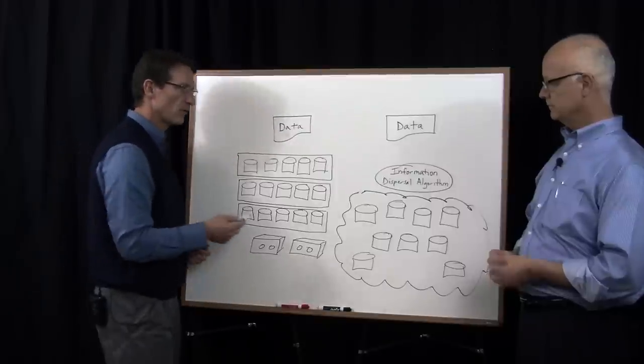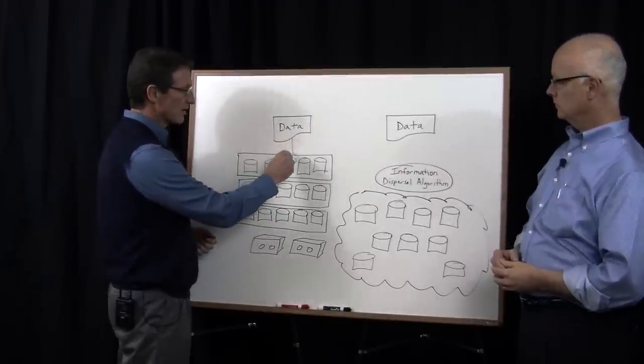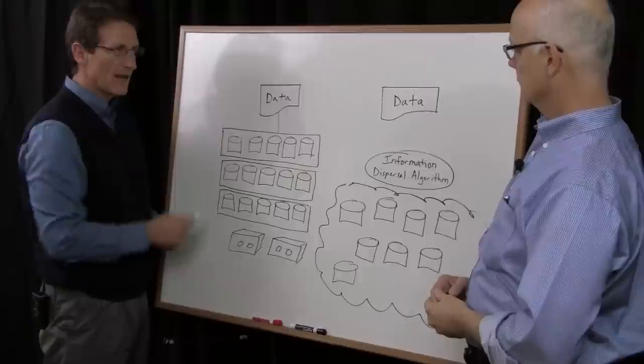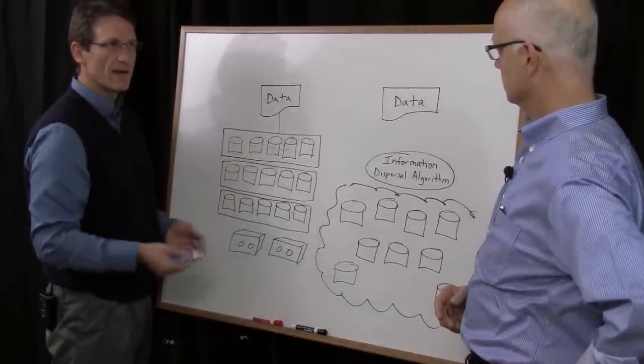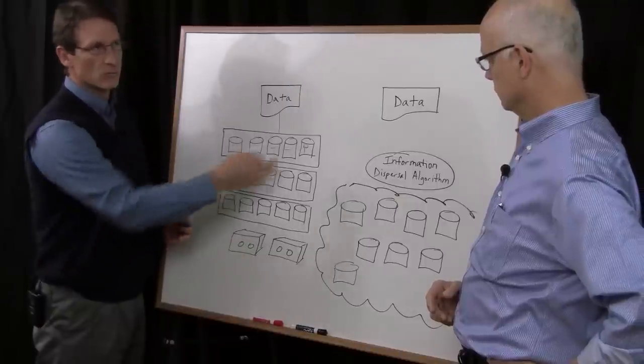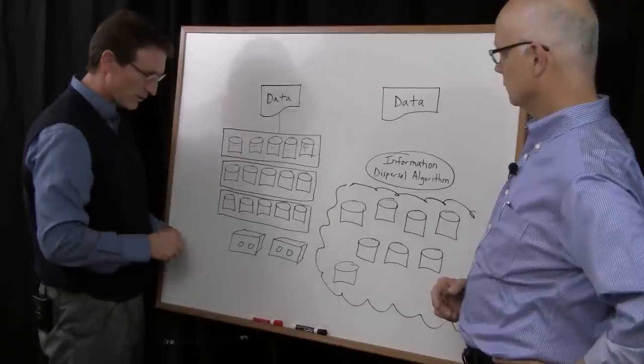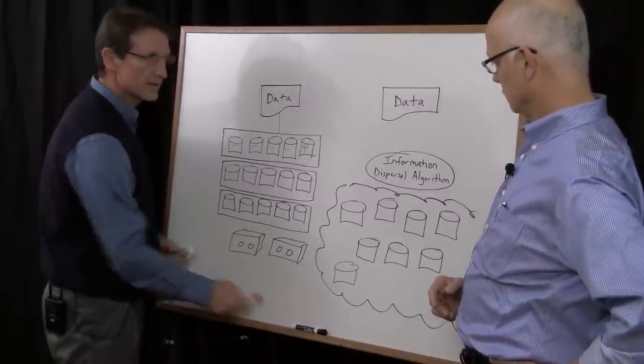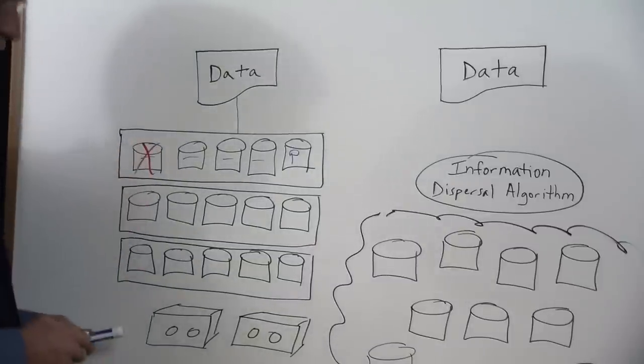Let me start with traditional storage first, and then we'll go into information dispersal. Today, or with most storage systems today, data comes in from an application into the storage system, and generally it's striped across a number of drives in an array format. There's parity that's calculated, and that's how data's written to a storage system today.